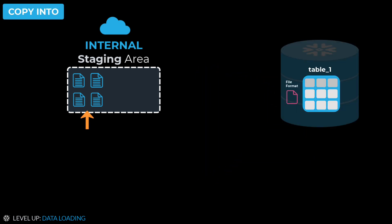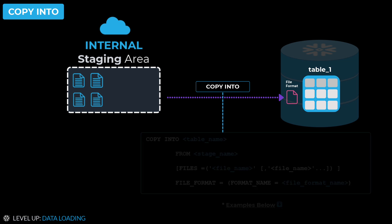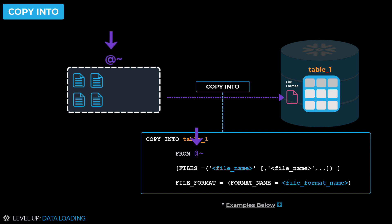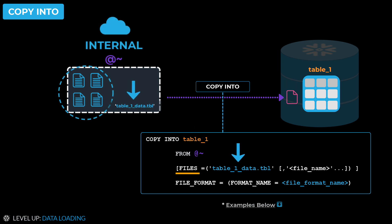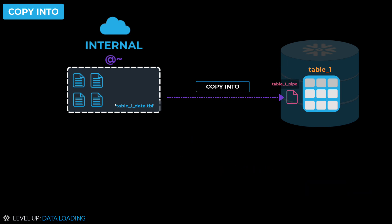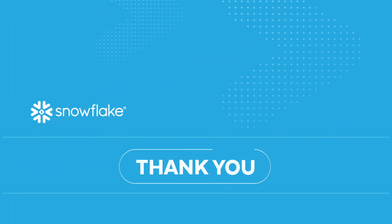Now that we have our files staged and created our file format, we can load our staged data into Snowflake's tables using the COPY INTO command. Please note, we will need a virtual warehouse running to execute the loading process. The syntax is: COPY INTO, followed by the table name where the data will be loaded, then FROM and the name of the stage where the data is coming from. Here we list the name of the files that will be loaded, and include our newly created file format. Once complete, execute the COPY INTO command, and all of your staged data will be loaded into Snowflake's tables.